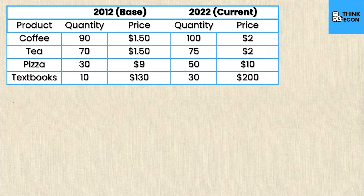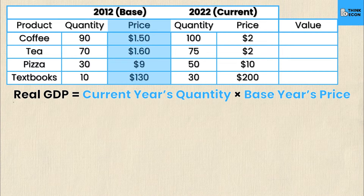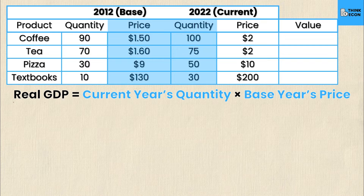Unlike our other video, this one focuses on real GDP rather than nominal. Real GDP is simply the current year's quantity — the year you're trying to calculate for — times the base year's price. The base year's price is the column highlighted in blue, and the current year's quantity is also highlighted in blue.